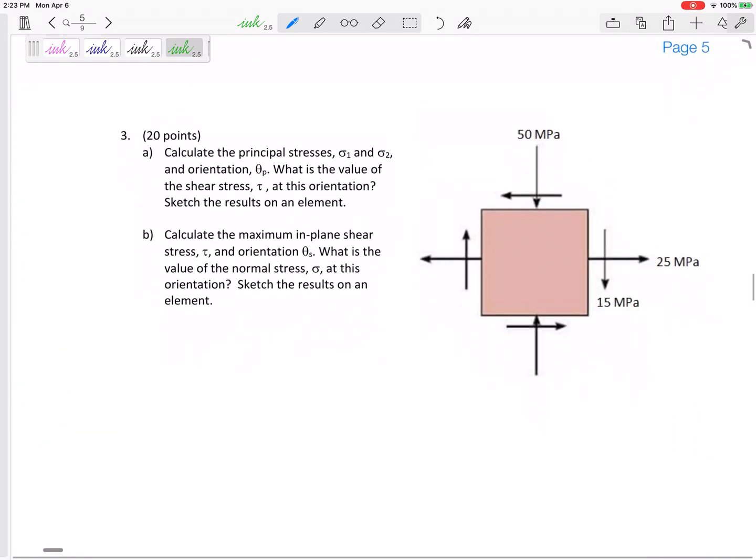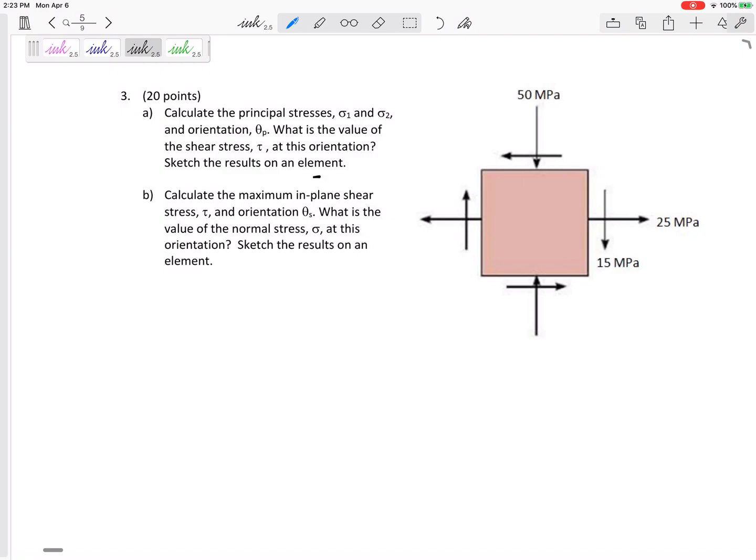Alright, so anyway, part A: hey what are the principal stresses, theta one, sigma one, sigma two, and the orientation theta p? What's the value of the shear stress at this orientation? Don't forget to go ahead and answer that question for me. Let's talk about that one. And then sketch the results. Then next we're going to say, hey, what's the maximum shear stress and orientation? And don't forget to answer this question for me right here. And you will show me that when you sketch it, but let's talk about that.